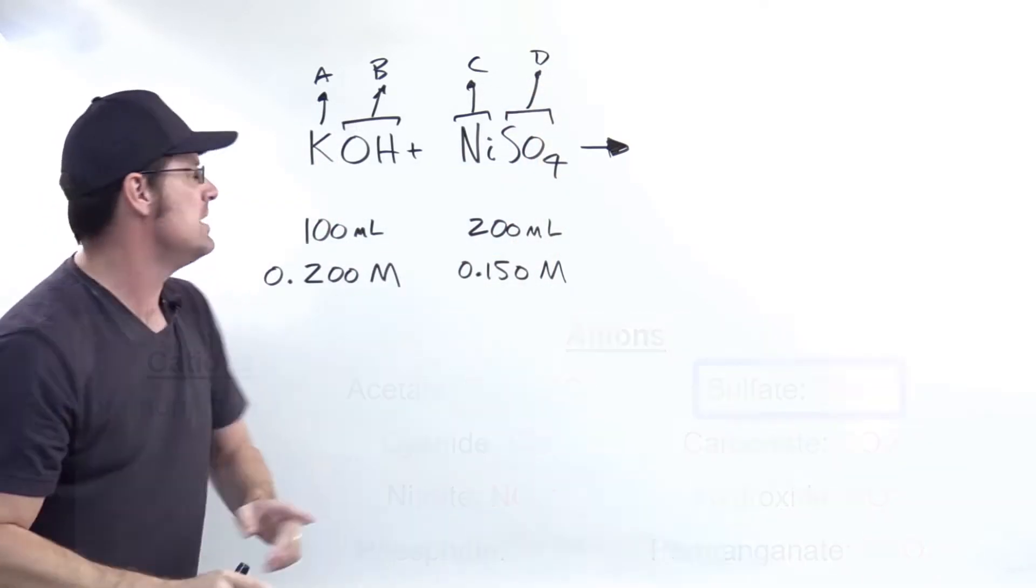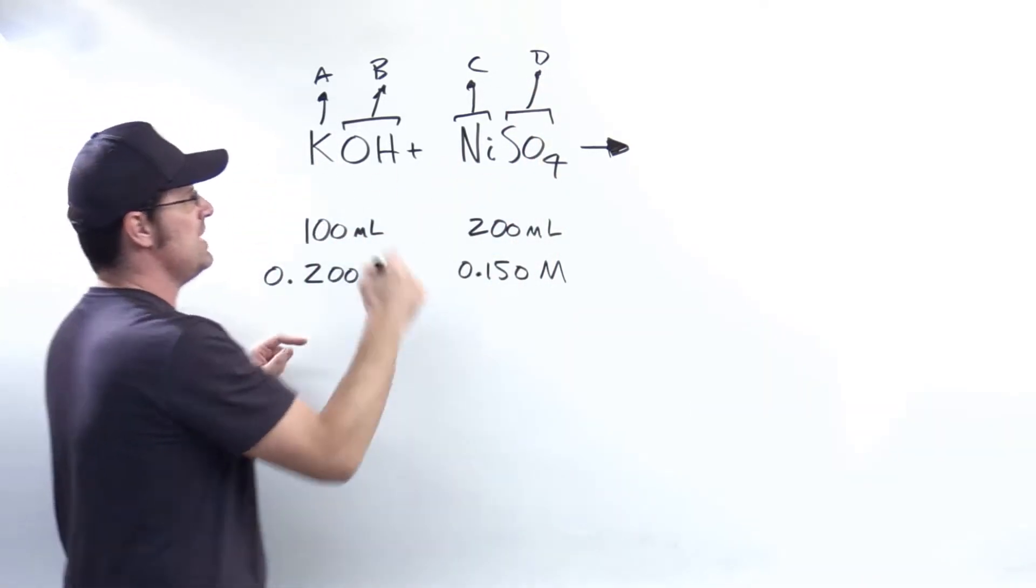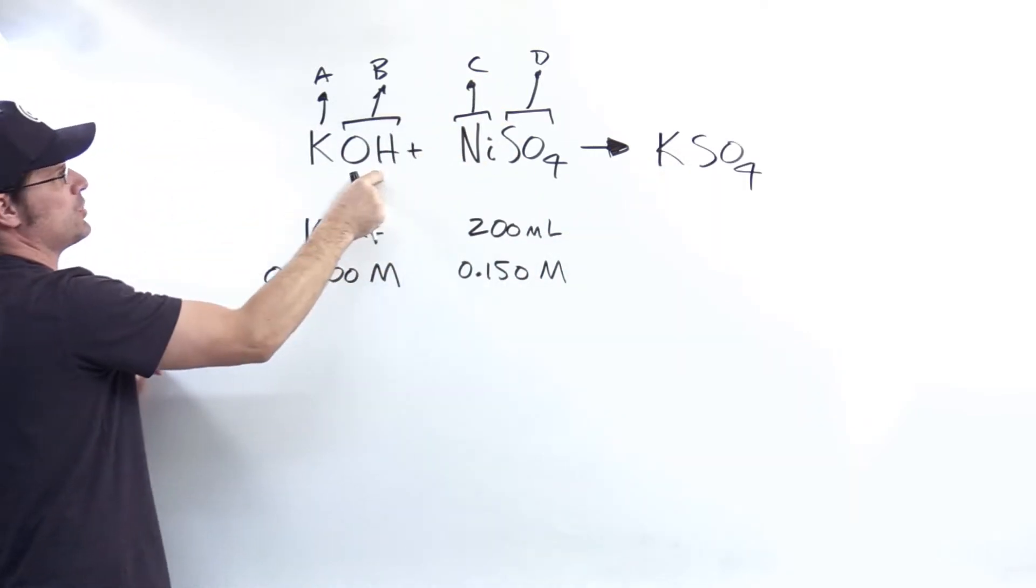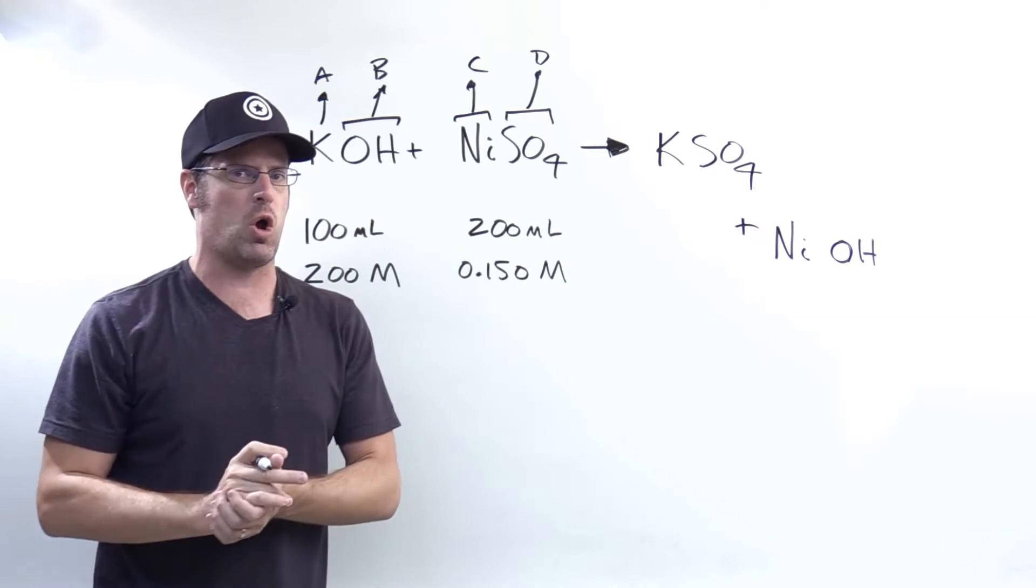So what I'm going to initially do is just have them swap partners. K, my A, will go with sulfate, my D. And nickel, my C, will go with hydroxide, my B. Which I've written in this way to give us a little bit of room.